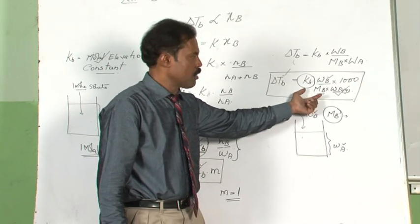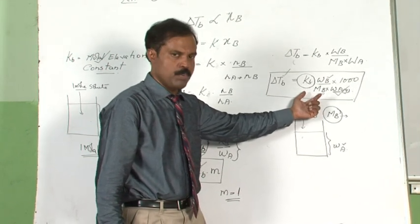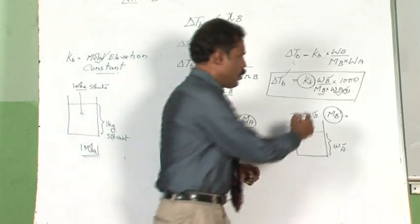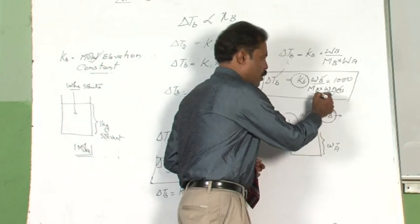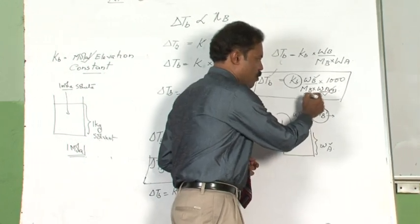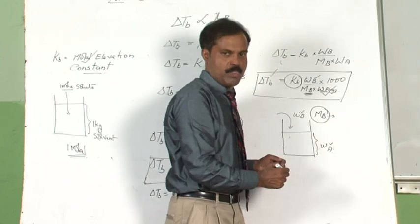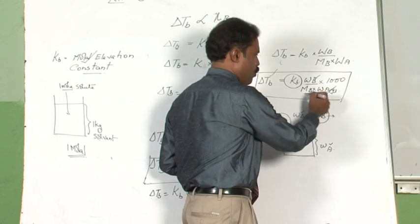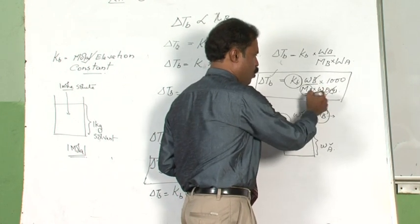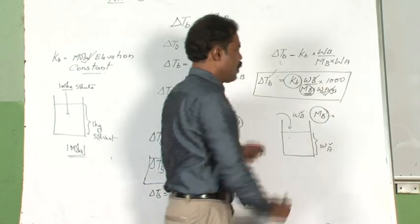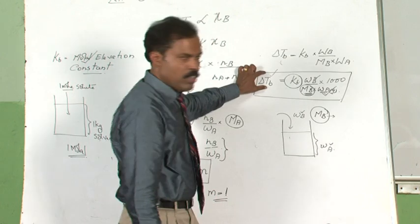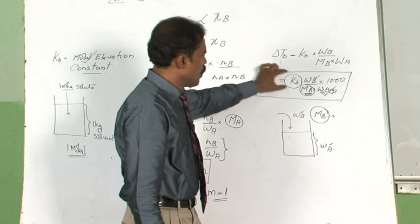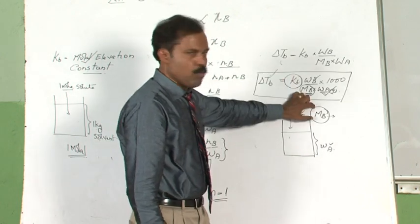The process method is very simple. Take a substance whose molecular weight is already known to us. The weight of the solute is known, weight of the solvent is known, molecular weight of the solute is known. Find out the elevation in boiling point, and Kb can be calculated.